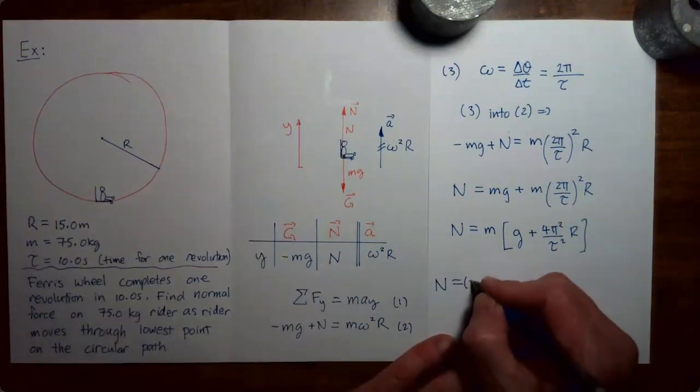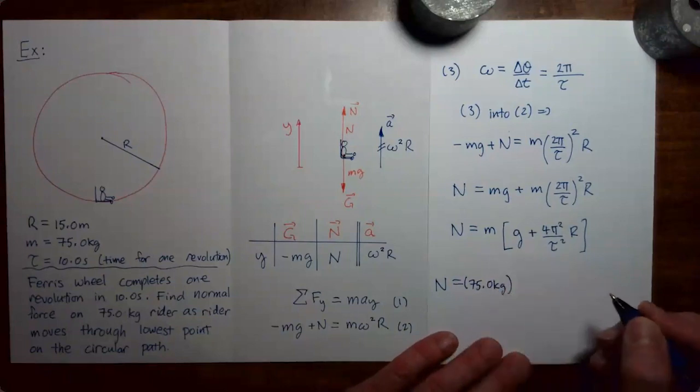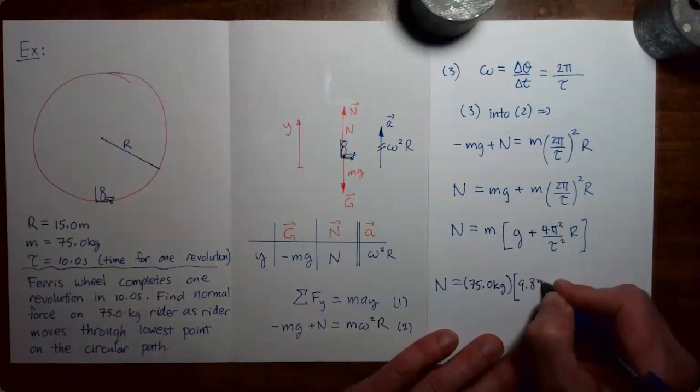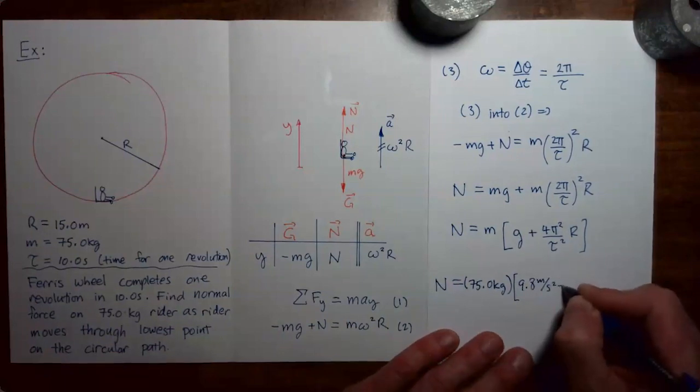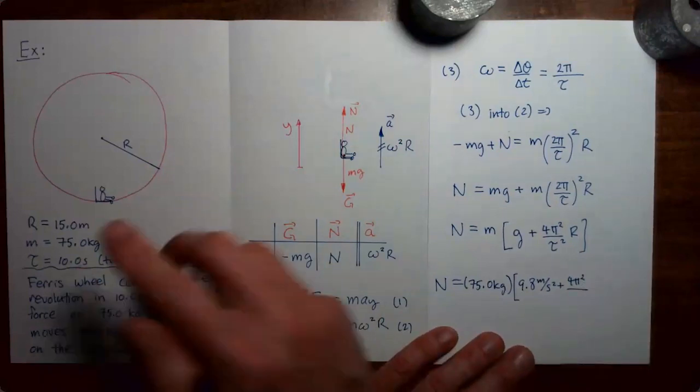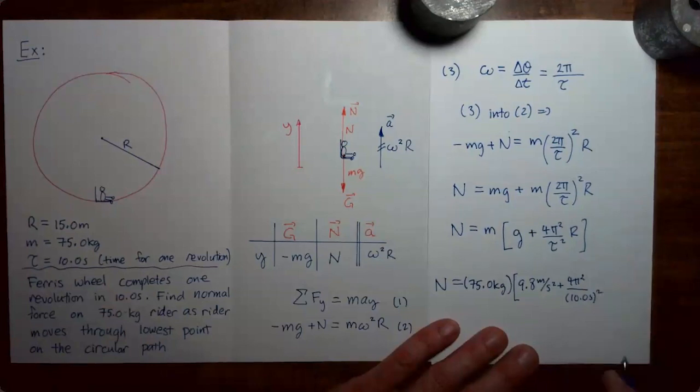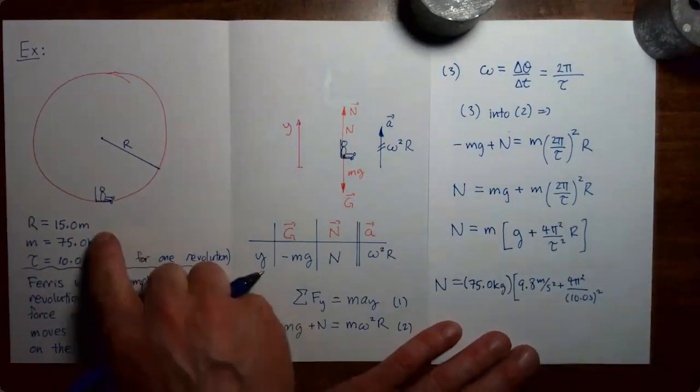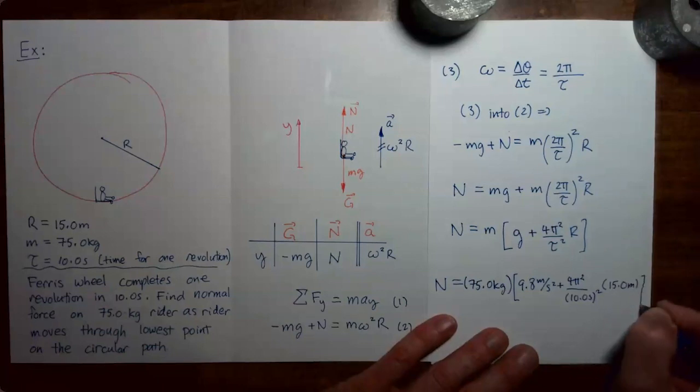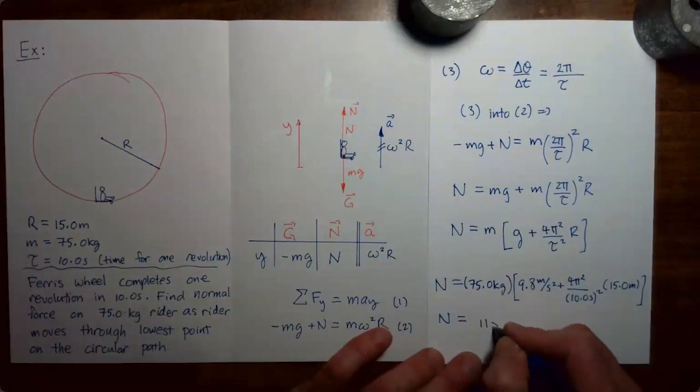And now we can substitute to find the normal force on the rider at the lowest point. The mass is 75 kilograms. G, 9.8 meters per second squared. And we have plus 4 pi squared divided by tau squared. Tau is 10 seconds. So that's squared and then r is 15 meters.